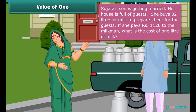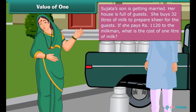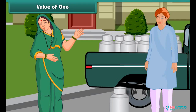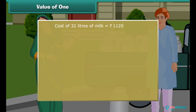Sujata's son is getting married. Her house is full of guests. She buys 32 litres of milk to prepare kheer for the guests. If she pays 1,120 rupees to the milkman, what is the cost of 1 litre of milk? Cost of 32 litres of milk is 1,120 rupees. Cost of 1 litre of milk is 1,120 divided by 32.